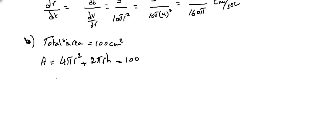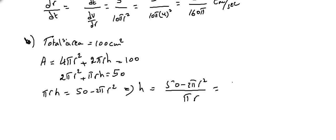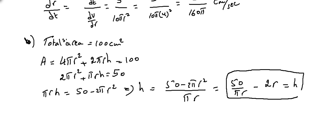Dividing through by 2: 2π r² + π r h = 50. Solving for h: π r h = 50 − 2π r², so h = (50 − 2π r²)/(π r). Simplifying: h = 50/(π r) − 2r. This gives the height h in terms of radius r.